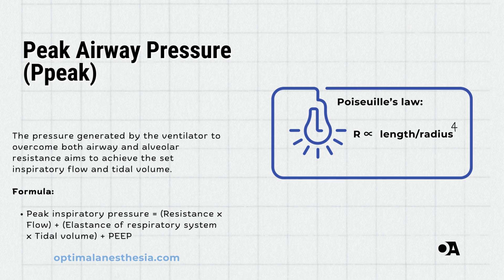Peak airway pressure is the ventilator's pressure to push air into the lungs. This pressure has to overcome both the resistance in the airways and the resistance in the alveoli, the tiny air sacs where gas exchange happens. Poiseuille's law tells us that the resistance in this pipe is directly related to its length and inversely related to its radius raised to the fourth power. So if the pipe's radius is halved, the resistance increases by 16 times. Typically, peak airway pressure is less than 35 centimeters H2O in mechanically ventilated patients.